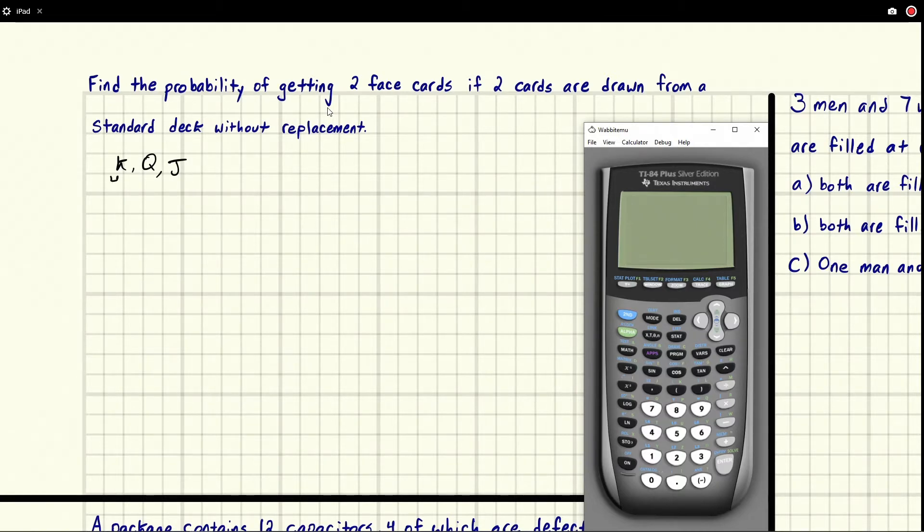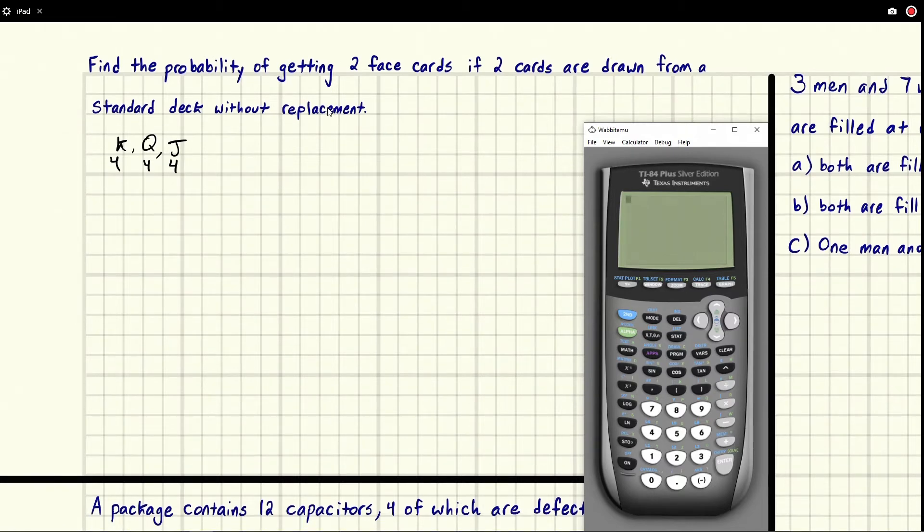So if we draw two face cards, the probability of getting two of them - here's our first draw, here's our second draw, and we're not replacing them. At the beginning we start with 52 cards, then we lose a card because we didn't put it back, so